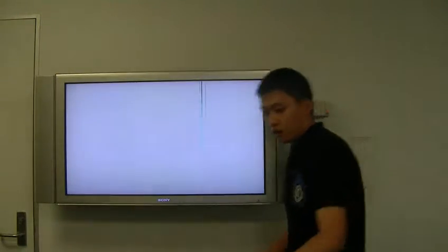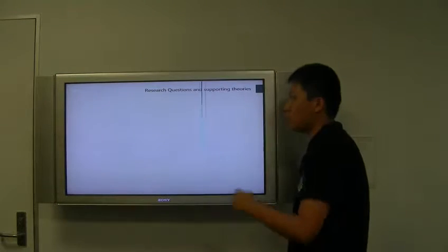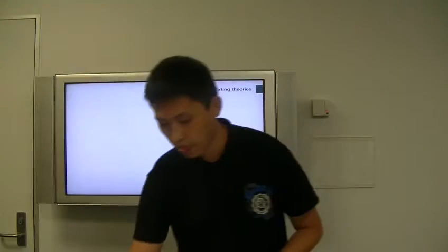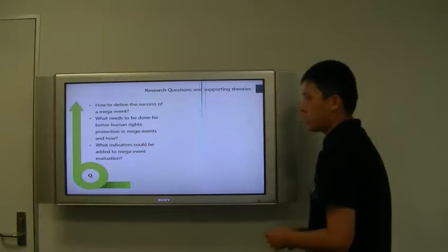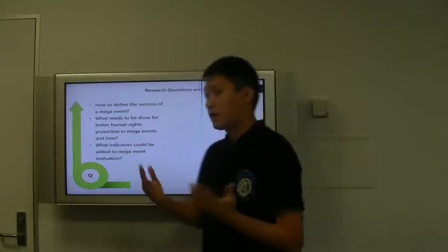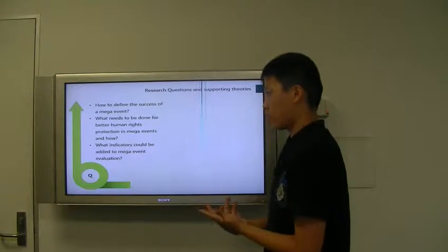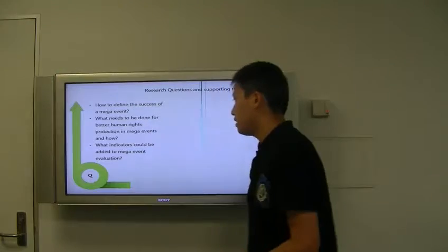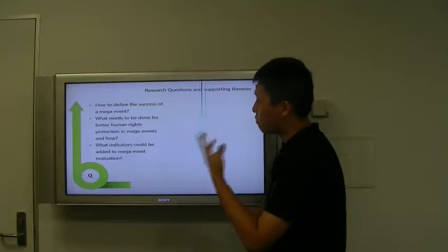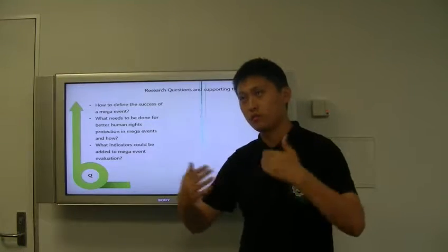So based on this research gap, I came up with the research questions and some possible choices of supporting theories. So first, for the questions: how to define the success of mega events? And what needs to be done for better human rights protection in mega events? And more importantly, how to realize that? And thirdly, we're talking about the model. What indicators could be added to mega events evaluation? It's a more specific one.